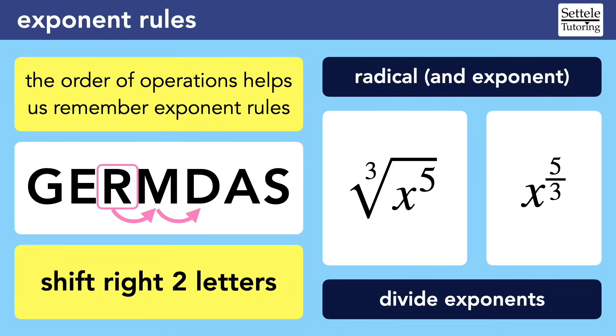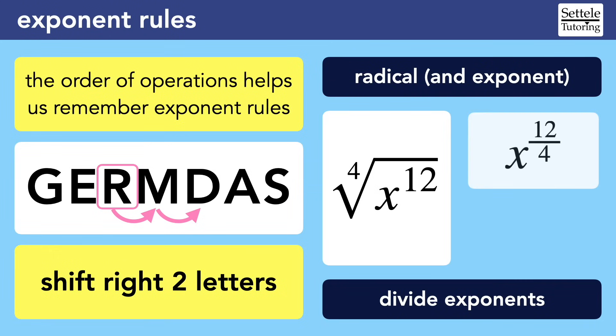This is an important rule that the SAT absolutely loves to ask about. So let's look at another example. In this case, we have a fourth root and an exponent of 12 on the base. Dividing the exponent by the root, we get a fraction of 12 over 4, which we can reduce just like any other fraction. So our final answer is X to the third.